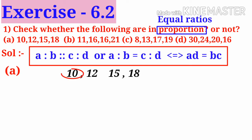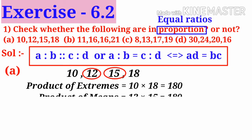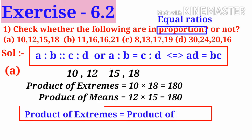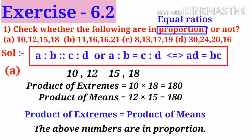Take the extreme values 10 and 18. Take the product: 10 into 18 is 180. And take the middle terms, 12 and 15. Now do the product: 12 into 15 is 180. Both values are equal. So product of extremes is equal to product of means. So the above numbers are in proportion.